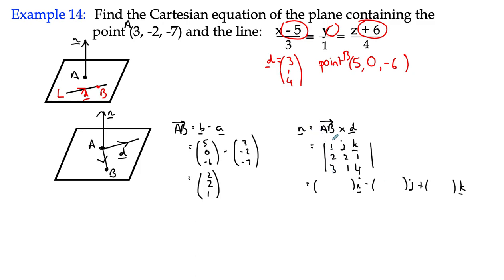So vector I, removing column I, I've got 8, minus 1, and column J, missing that, I've got 8, subtract 3, times 1 is 3. And missing out column K, I've got 2, minus 6, 2, subtract 6, which gives me 7I, minus 5J, minus 4K.